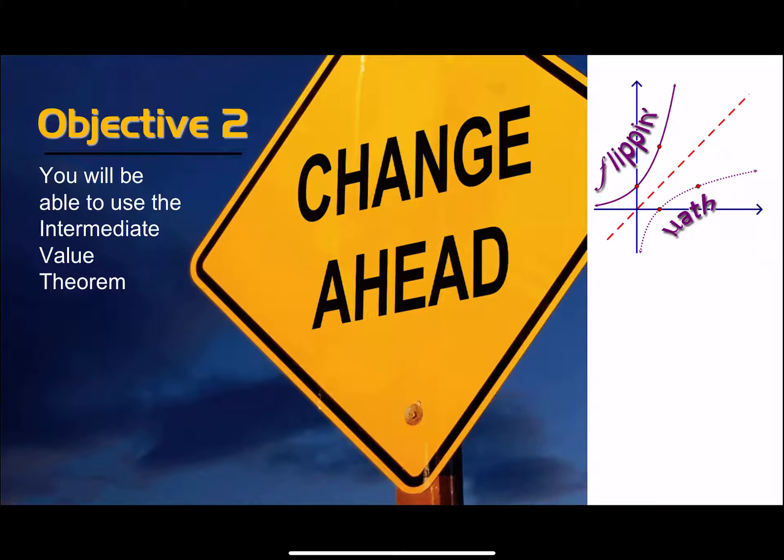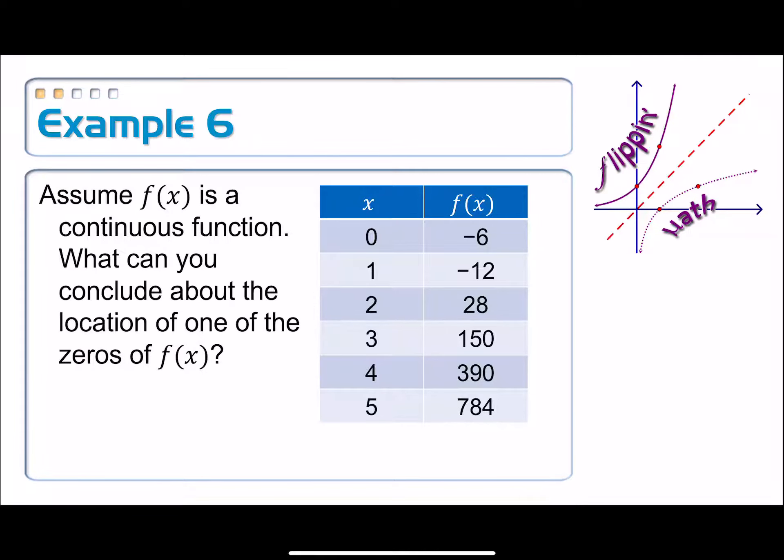So let's take a look at how you would have seen it before calculus. Example 6. Assume f of x is a continuous function. What can you conclude about the location of one of the zeros of f of x? So we just have a table of values here. And what I want you to notice, take into account here, are the y values.